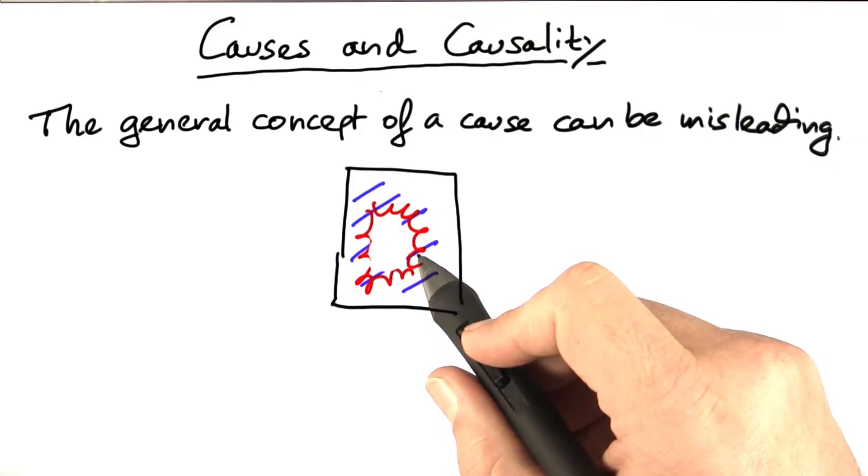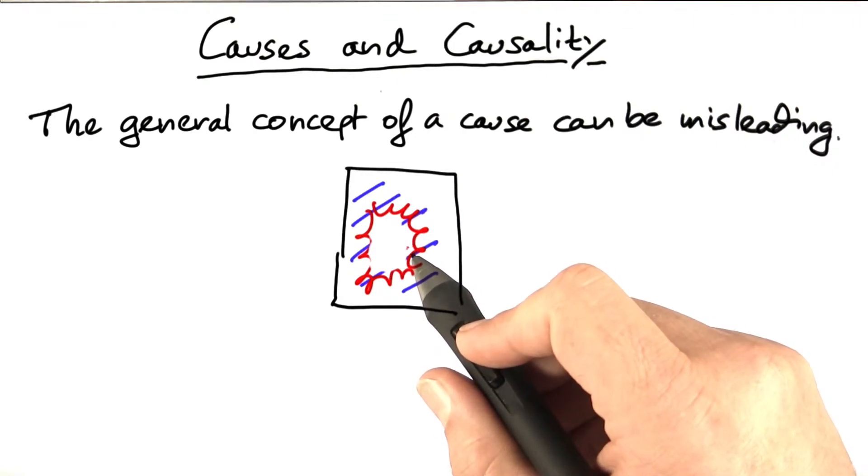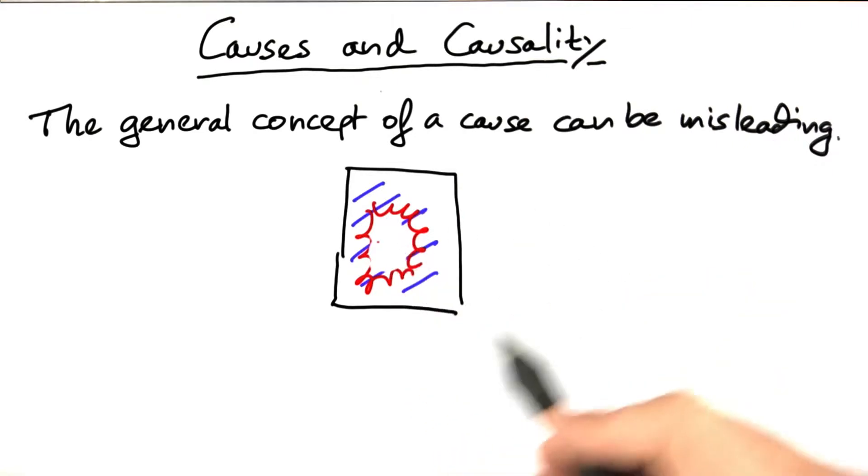Finally, the general concept of a cause can be misleading. If you think about the window shattering, we said it was the ball. That's right, but it could also have been the window maker.